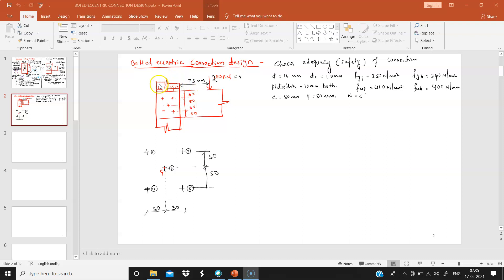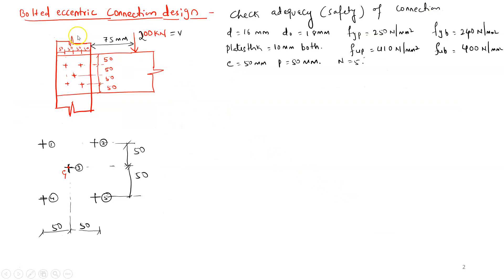The connection consists of two plates — a vertical plate and a horizontal plate — connected by five bolts. The bolts are arranged with edge-to-center distances of 50 mm. The pitch distance is 50 mm, the gauge distance is 50 mm, and the end distance is also 50 mm.